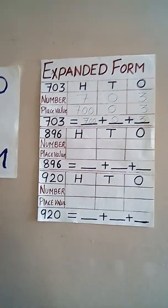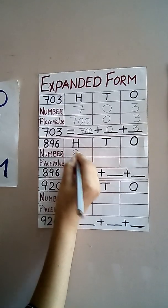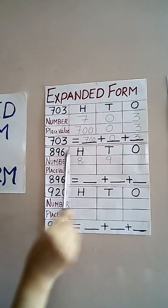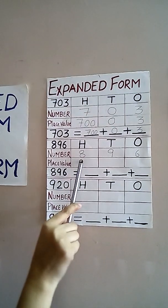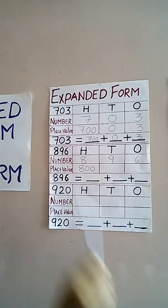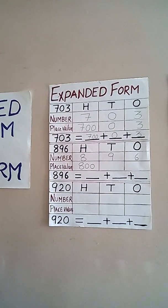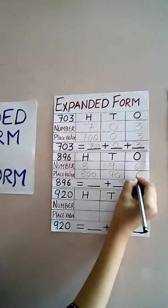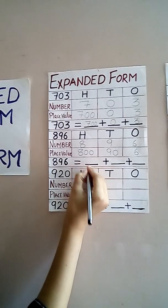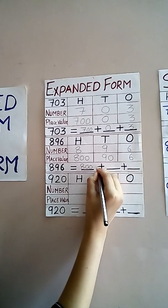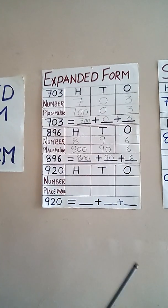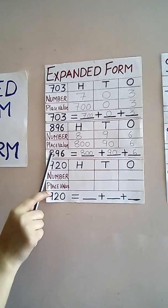The next one. 896. Here, hundreds place — which is the number 8, so write down 8. And tens place — which is the number 9, write down 9. Ones place — 6. So our number at hundreds is 800, its place value will be 800. And 9's place value is 90. So write down here 800, and then the sign of plus. Then 90, again the sign of plus. Then this 6. When we add these digits, we get this number — 896.